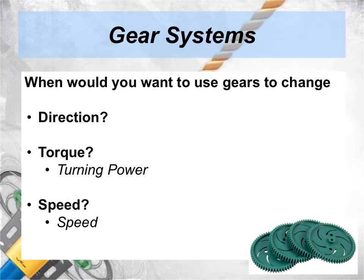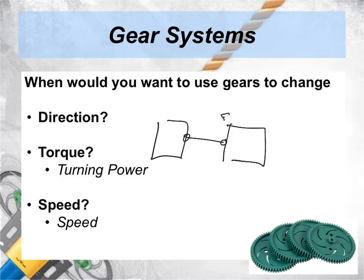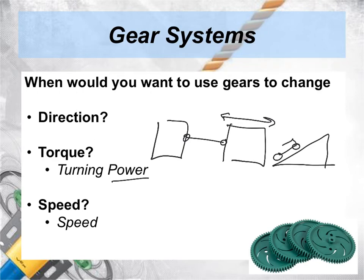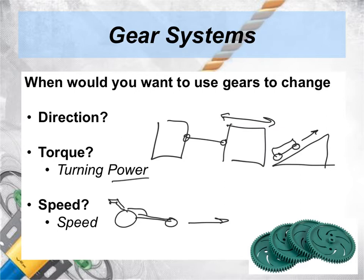Can you think of some situations in robotics when you would want to use gears to change direction? Maybe you have two or three wheels and you want them all turning in the same direction. How about torque? When would you want your robot to have turning power? Maybe you're playing some type of tug-of-war game and you're trying to pull the other robot with as much torque as possible. Maybe you want your robot to climb up a steep incline, so you gear up the robot so it can go up the hill. How about speed? Maybe you want your robot to be a dragster — like those super-fast drag racing cars. Maybe you want to change up the gears and have your robot go fast. There are a lot of different examples; those are just a few.